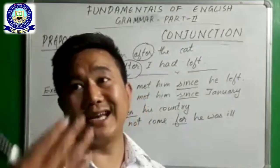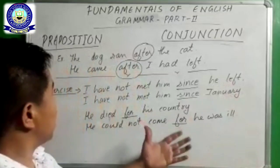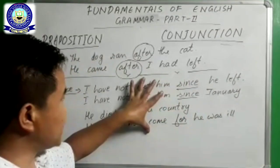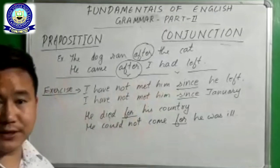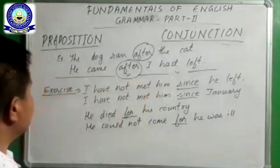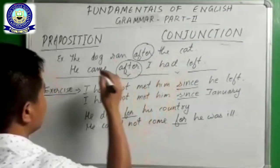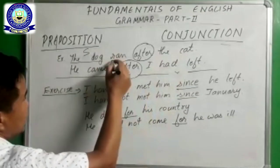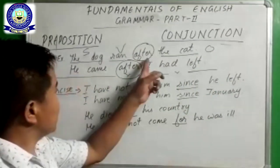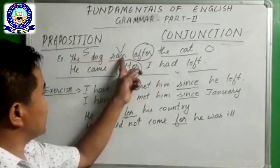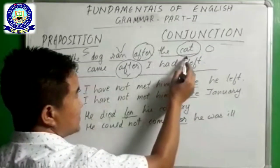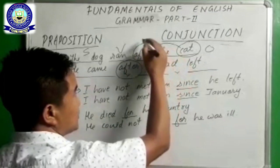Now there are some words in English that work both as preposition and conjunction. In what way can we identify whether they are working as conjunction or preposition? I will give you one example: 'The dog ran after the cat.' Here we have the subject, the verb 'ran,' and the object. Cat is an object and it is a noun, and 'after' is placed before the noun 'cat,' so here 'after' is working as a preposition.